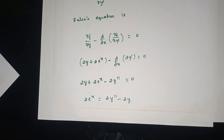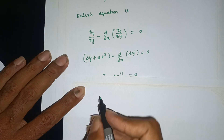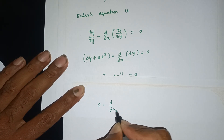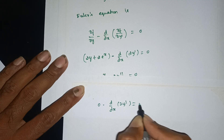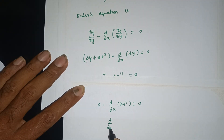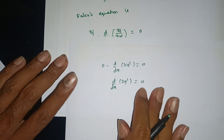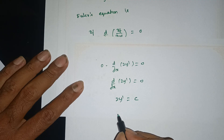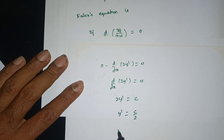So d/dx of (2y') = 2λx. Integrating both sides: 2y' = λx² + k, which gives y' = (λx²)/2 + C₁ on dividing by 2, where C₁ = k/2 is an integrating constant.